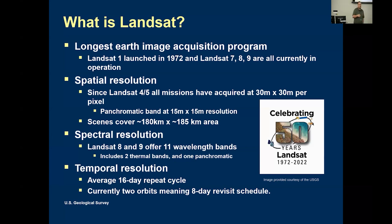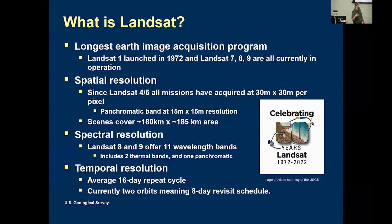We do have an electromagnetic panchromatic band that comes in at 15 meters by 15 meters per pixel, so it's a bit of increased resolution. You can use that to pan sharpen, which increases the resolution beyond the native 30 by 30. Landsat 8 and 9, which are the big ones operating right now, offer 11 wavelength bands including two thermal bands and the panchromatic band. The temporal resolution is an eight-day revisit cycle — Landsat 8 gets it, then eight days later Landsat 9 gets it.